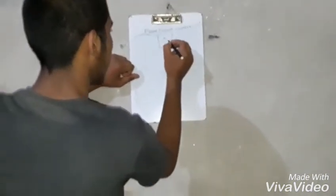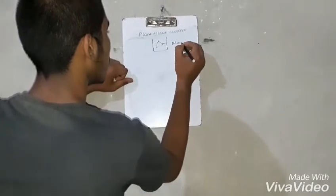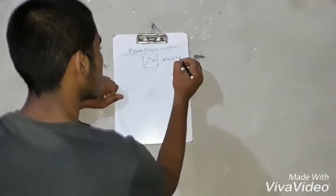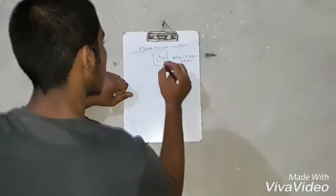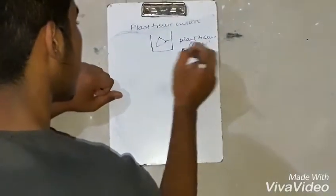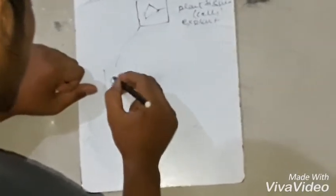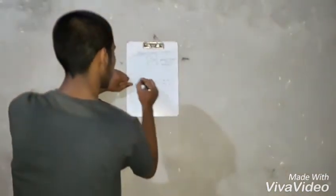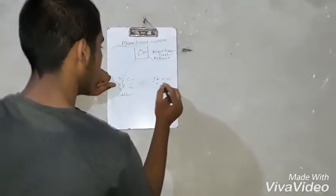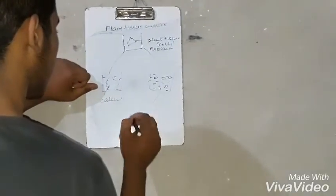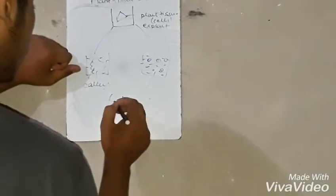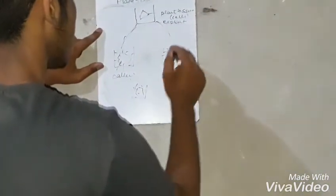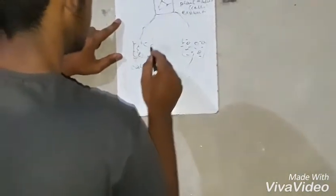First, we have to make the diagram. This is the plant tissue or cell, the explant. Callus - it is just like a cyclic way, a cyclic path.